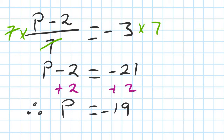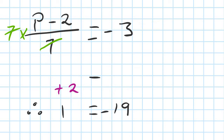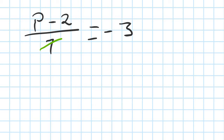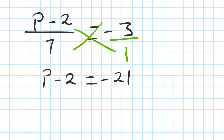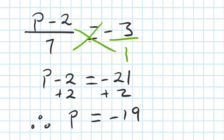Or using the cross-multiply method: negative 3 is the same as negative 3 over 1. Cross multiply: 1 times (p minus 2) is p minus 2, and negative 3 times 7 is negative 21. Then add 2 to both sides, so p equals negative 19. You can use either method — both give the same answer.